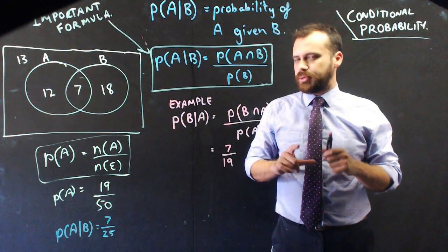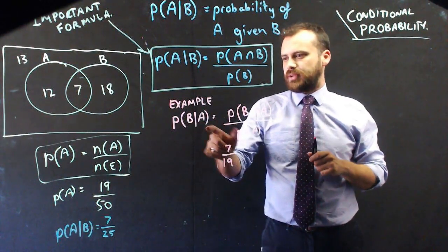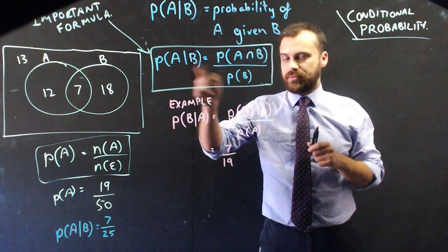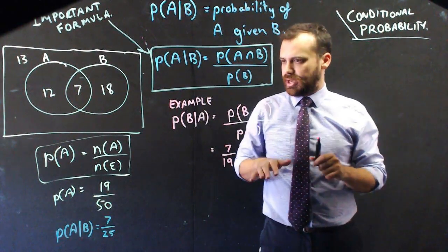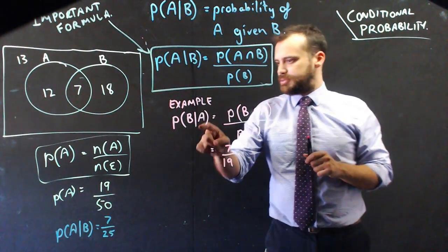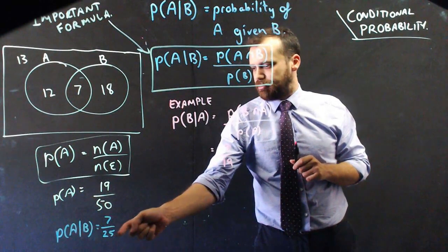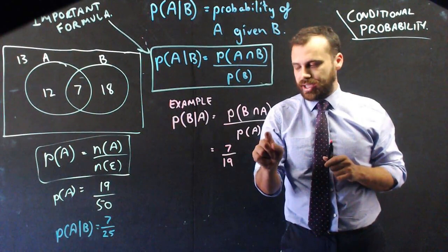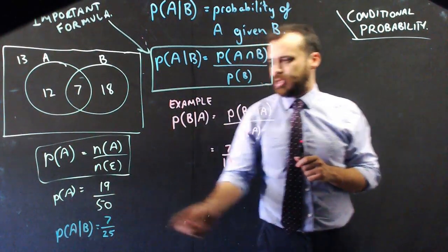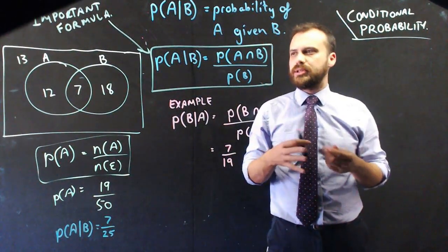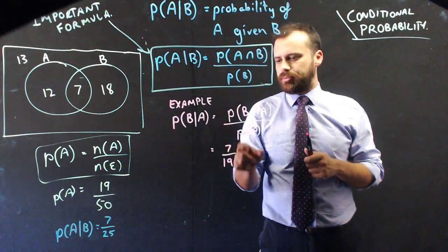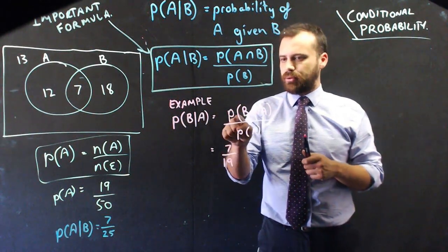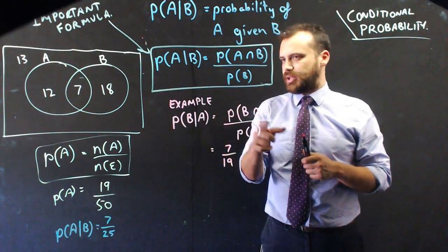That's important, because a lot of people think that the probability of B given A is going to be the same as the probability of A given B, but that is not the case. The reason it's not the case is because the sample space—the thing on the bottom—is different in both cases. In this one it's A, in this one it's B. Now, I keep using the word probability, but really I'm not talking about probability when I'm saying probability of B given A—I'm actually saying n of A.